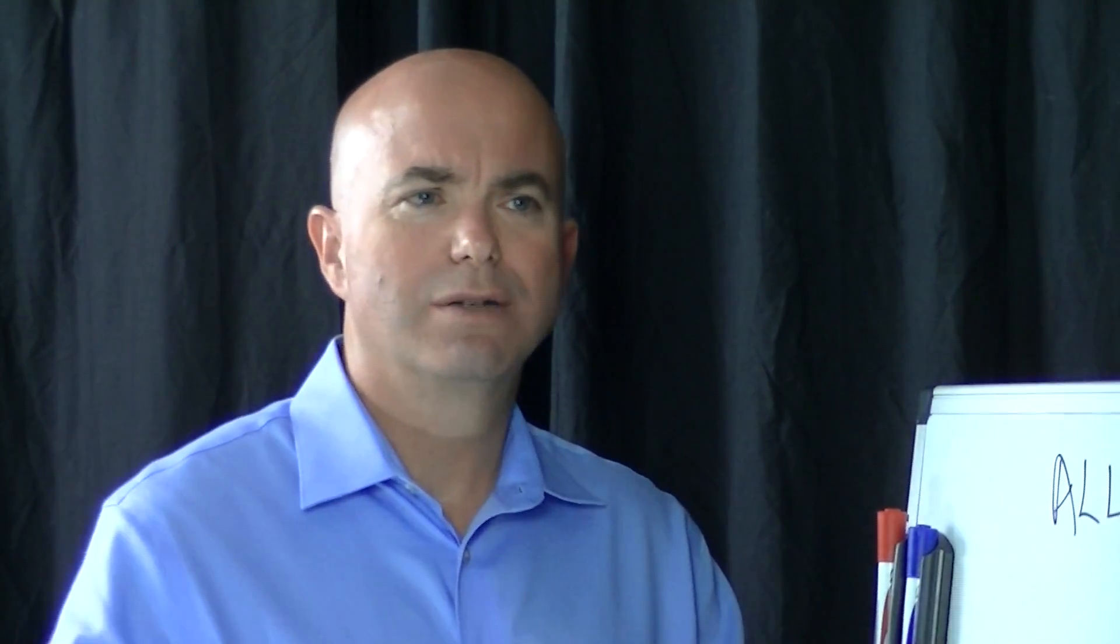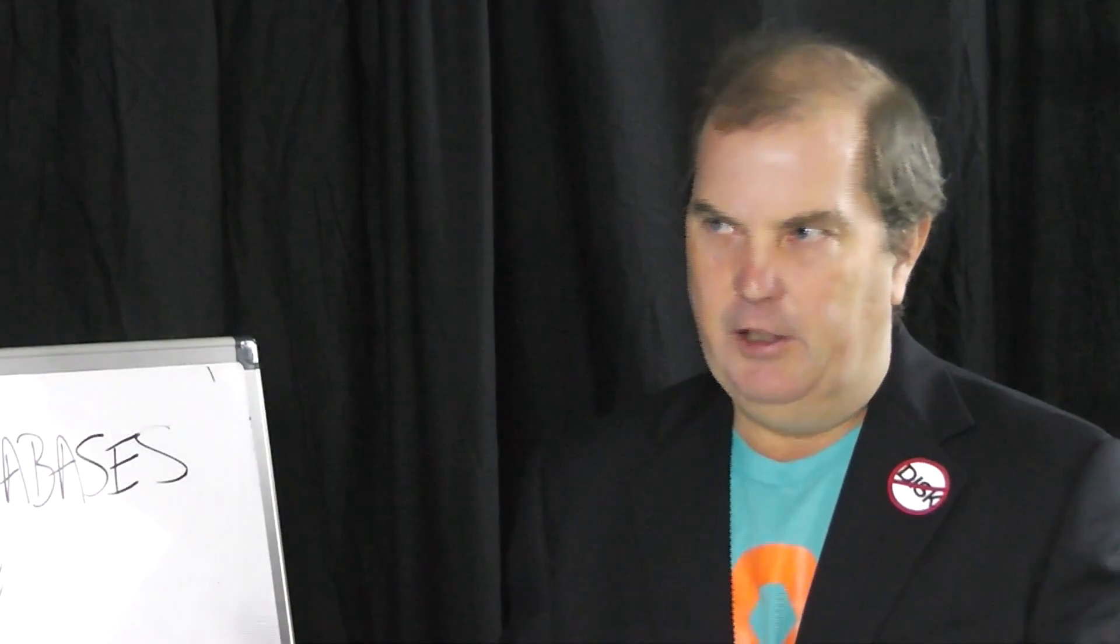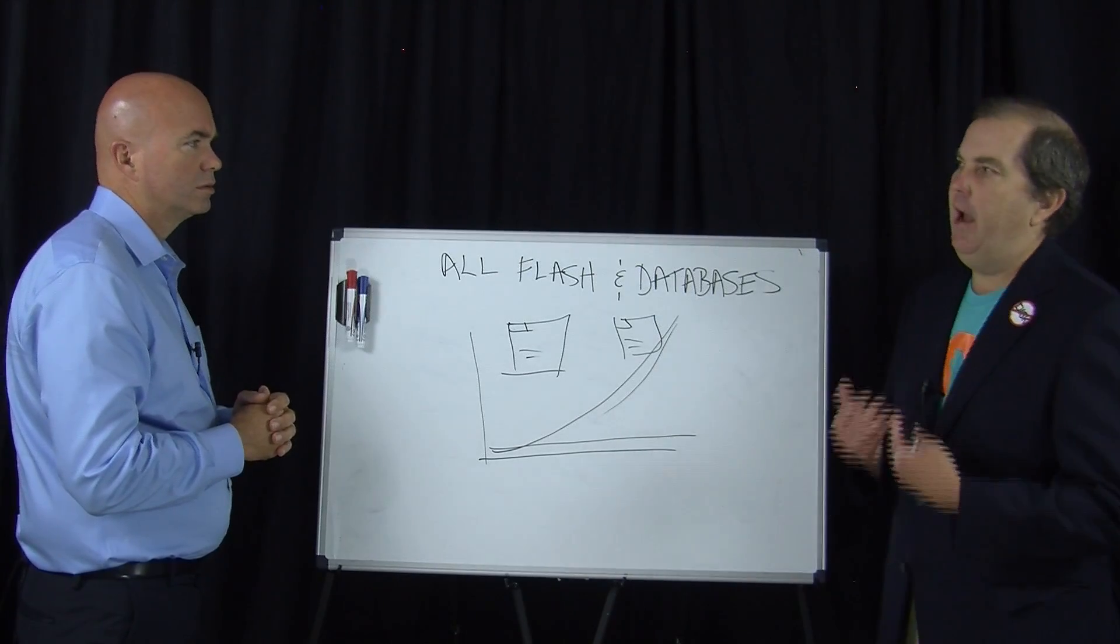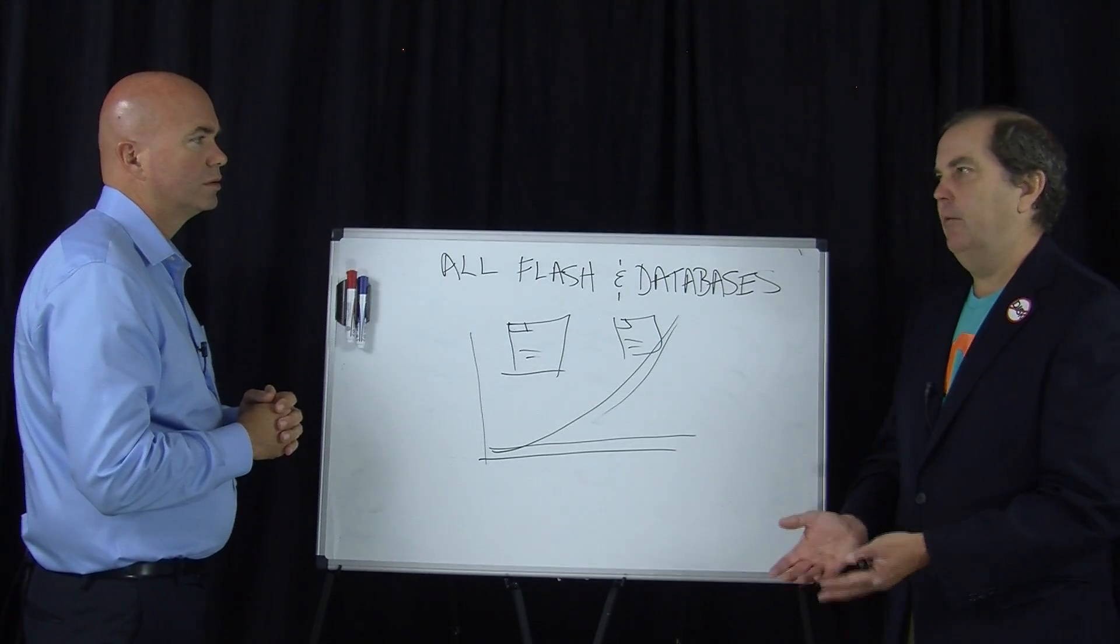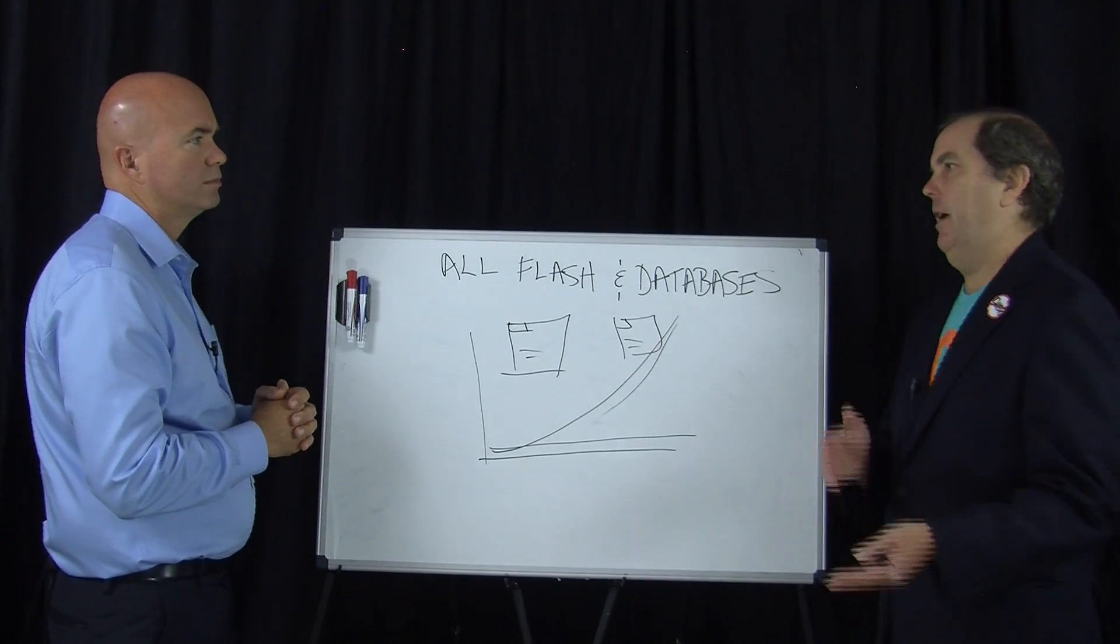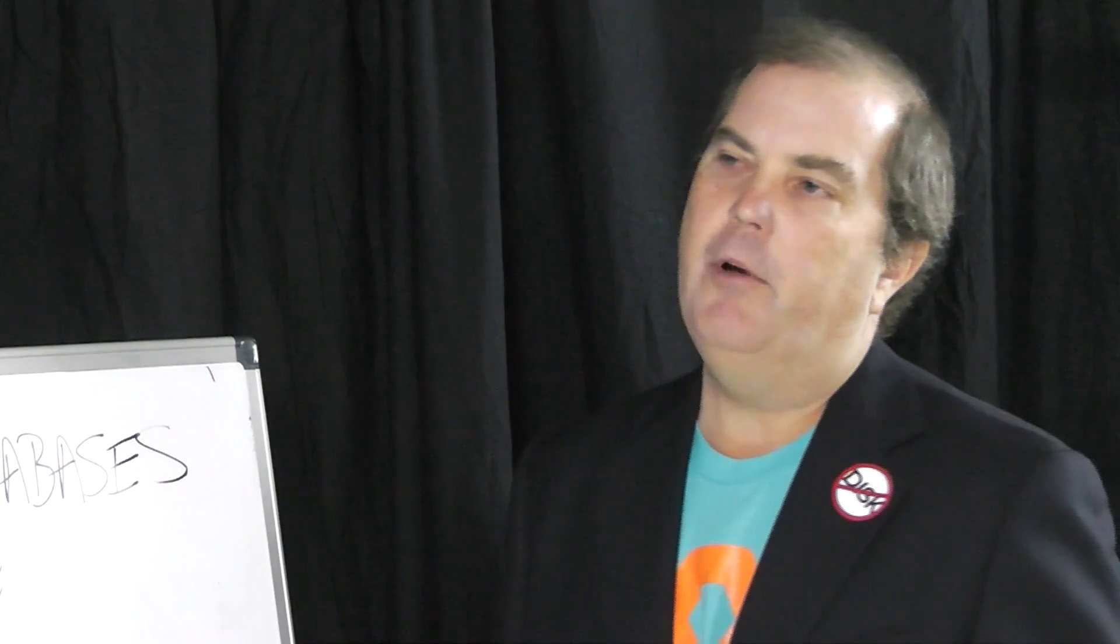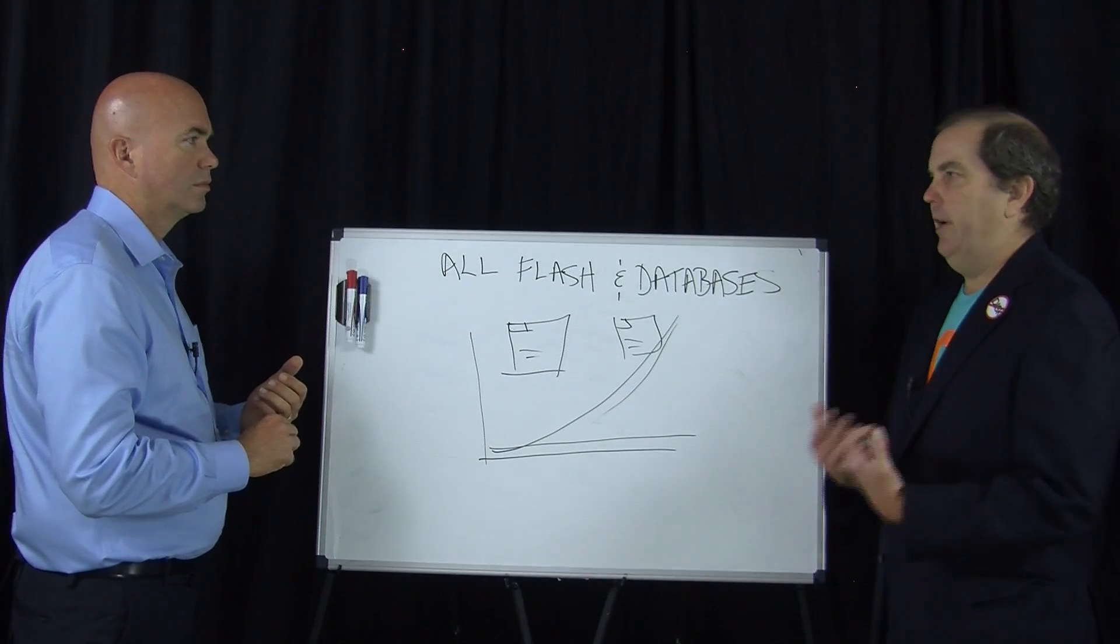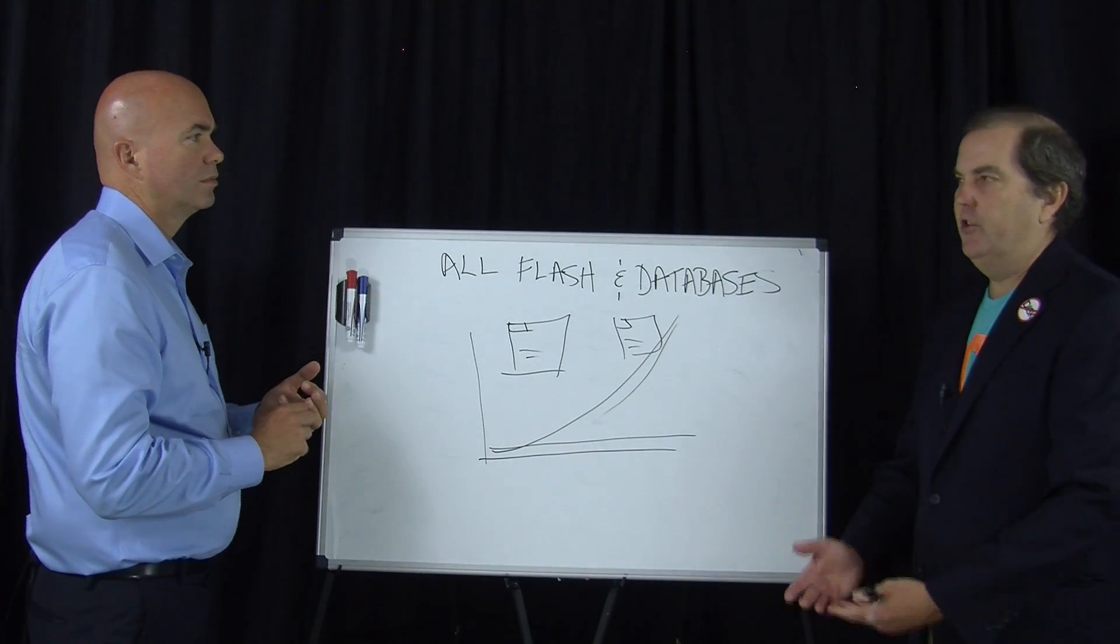So what about deduplication and compression? What role does that have to play in this environment? That has a big role because, obviously, it expands the capacity. But more importantly, when we take an I.O., we don't simply write the I.O. directly to the flash. We gather all writes together, and in that process, we do the dedupe, we do the compression, and then finally write it to the media. Before that write to the media occurs, we've acknowledged it back to the host. So as far as the host is concerned, the I.O. is done. But we have not only deduped and compressed, but we have also optimized the write so that, again, we're treating the flash nicely, we're writing to virgin flash, and we're writing in an efficient way.